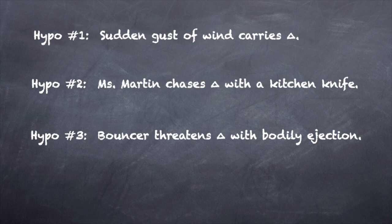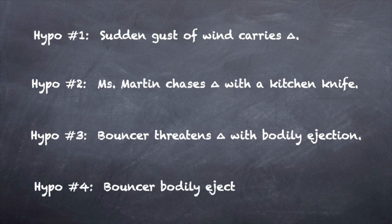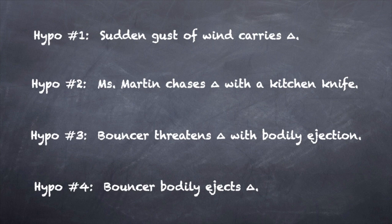Again, it doesn't matter that the defendant would rather have stayed inside. Finally, let's vary hypothetical three. The defendant will not leave, and so the bouncer picks him up and throws him into the street. Is the defendant convictable under the Alabama statute? He is not. As far as the voluntariness of the defendant's appearance in the street goes, this case is like the first hypothetical — and like the facts in Martin. The only difference is in who is doing the carrying. The defendant does not appear in the street under his own power.